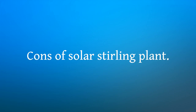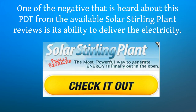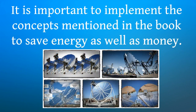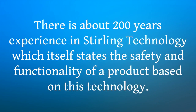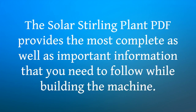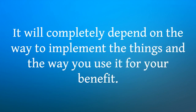Cons of Solar Sterling Plant. One of the negatives heard about this PDF from the available Solar Sterling Plant reviews is its ability to deliver electricity. As per the official website, it has claimed that the output will be 12 times that of the traditional source. It is important to implement the concepts mentioned in the book to save energy as well as money. There is about 200 years' experience in Stirling technology, which itself states the safety and functionality of a product based on this technology. It is highly recommended for homeowners who wish to reduce their electricity bills. The Solar Sterling Plant PDF provides the most complete and important information you need to follow while building the machine. It will completely depend on the way you implement things and the way you use it for your benefit.